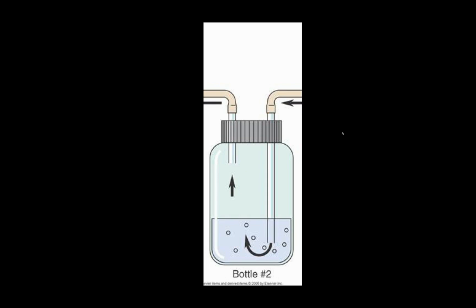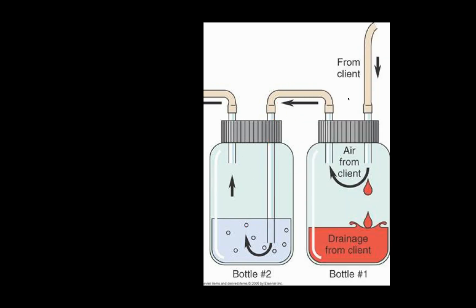Unfortunately, a water seal alone is not enough for a fully functioning chest tube. If fluid came in, the fluid level would keep increasing, and the higher it gets, the more resistance there is to more stuff coming down that tube. You could get to a point where this pressure is so high that fluid builds up in the lungs due to back pressure, or air has a hard time coming out. So to deal with that, there's a collection chamber where blood, pleural fluid, or whatever is in the pleural space can collect without building up resistance in the water seal.